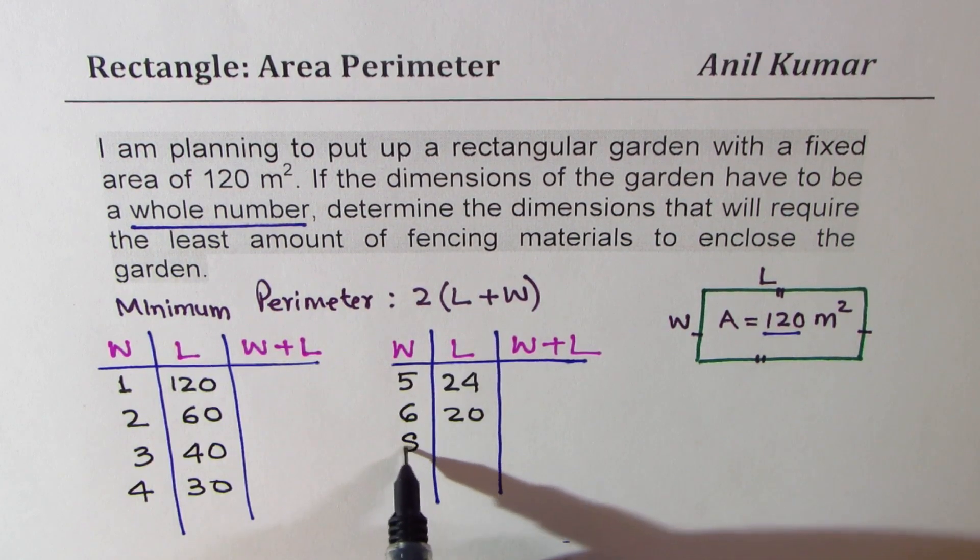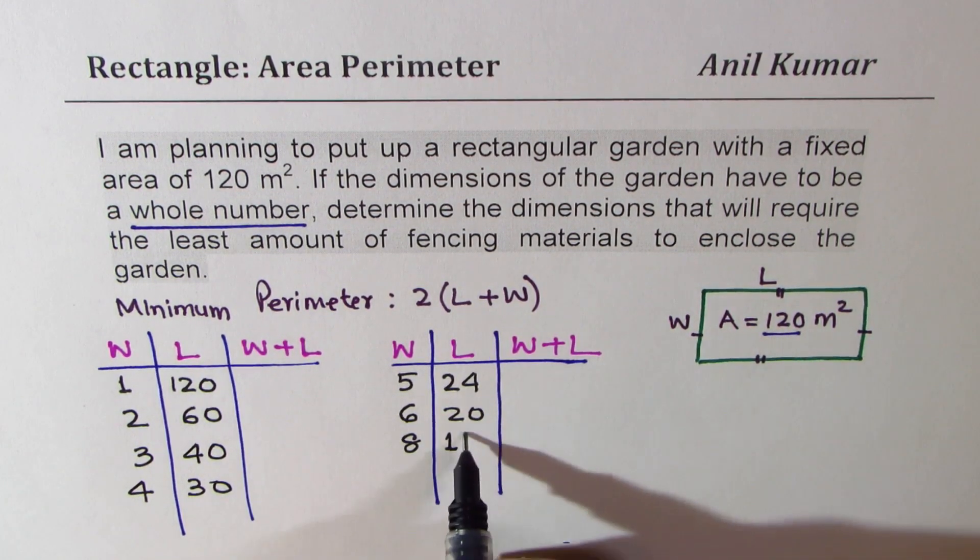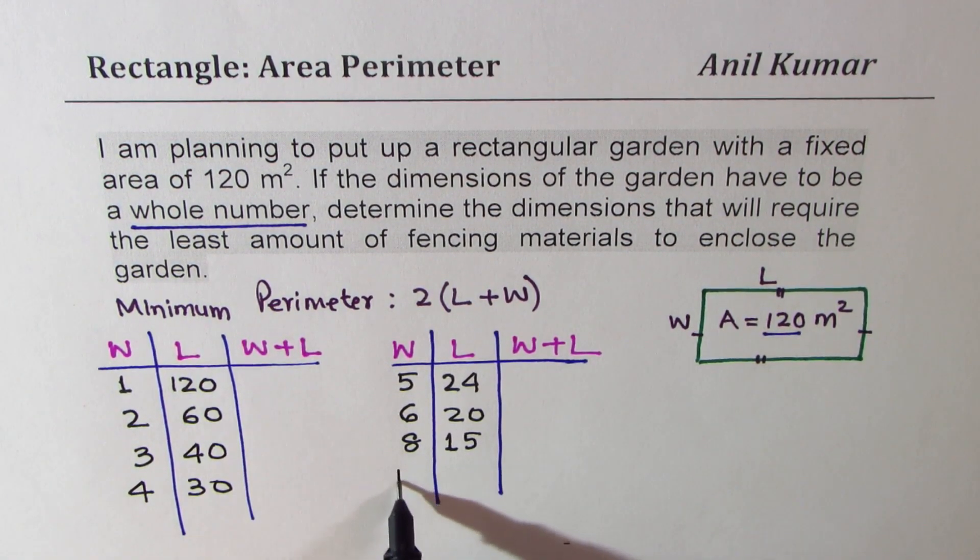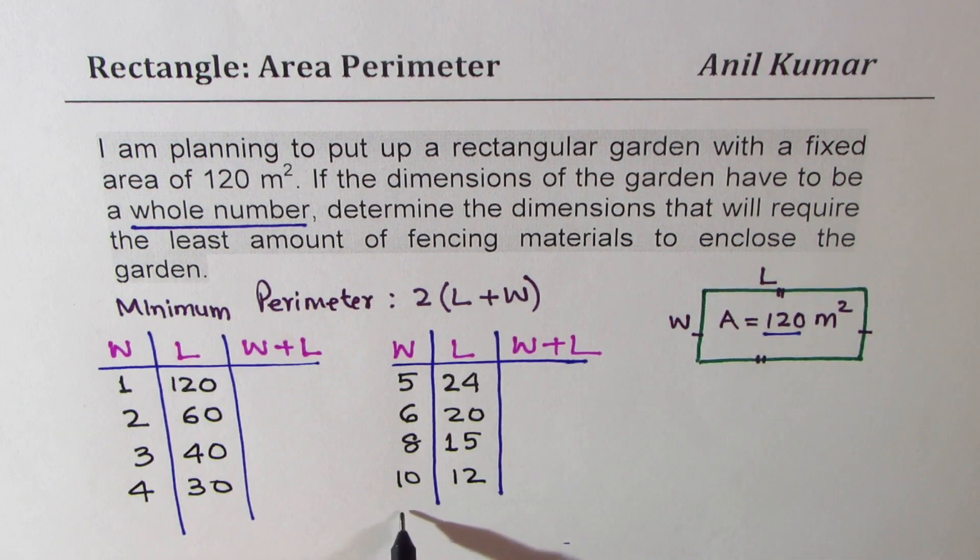7, no. 8, yes. 8 times 15 is 120. And then 10 times 12 is 120, and the next number is 12.